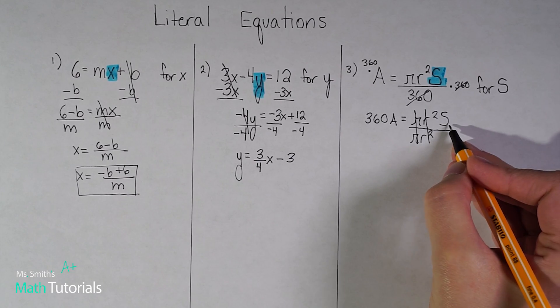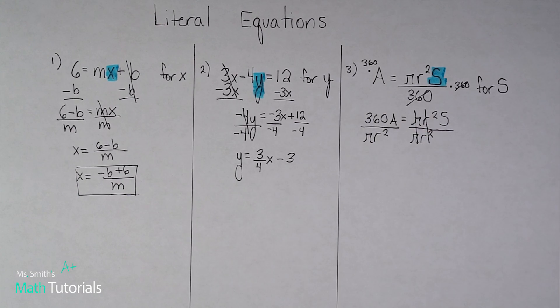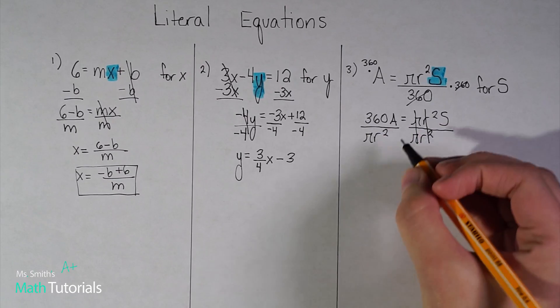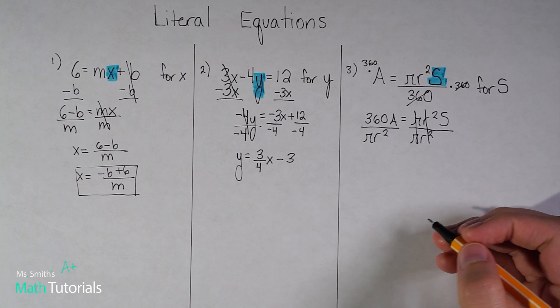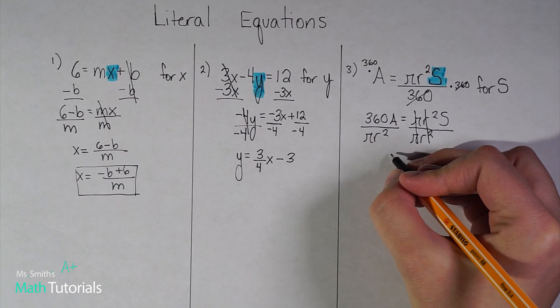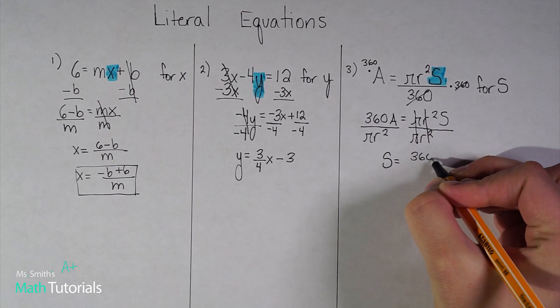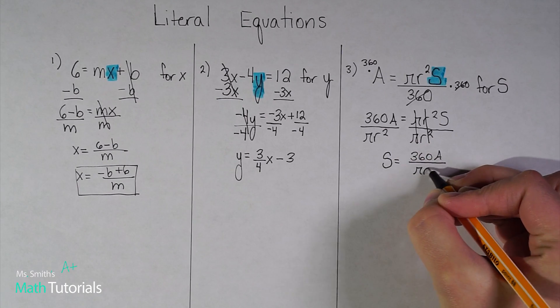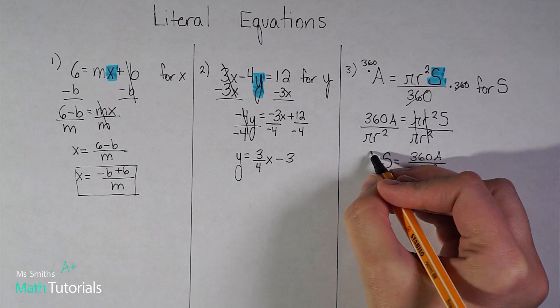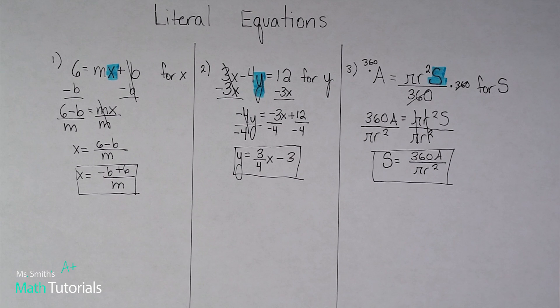Now I'm just left with s. But what I do to this side, I have to do to this side. I'm going to say that probably 20 million more times in this unit and for the whole rest of this class. So just get used to it. So let me rewrite what I've got here. And I want to make sure I simplify if I can. But looking at this, I know I can't simplify any of that. None of it's like terms. So I'm going to bring down my s equals 360a, 360 times a, over pi r squared. So there would be my final answer.